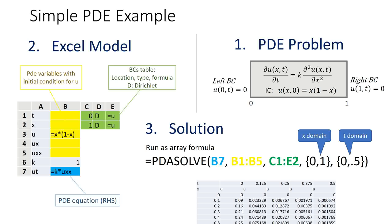All we need to do next is run PDESolve as an array formula in an allocated range. We pass the equation B7, the variables B1 to B5, the boundary conditions C1 to E2 and also pass spatial domain information which here I'm using a constant array to define the domain 0 to 1 and also the time interval 0 to 0.5.